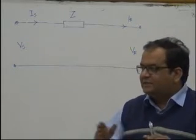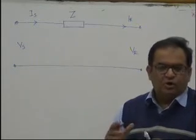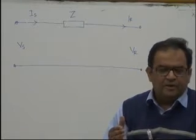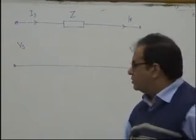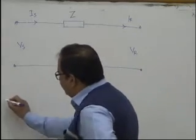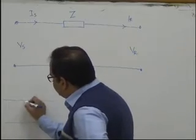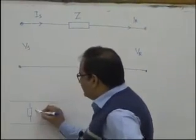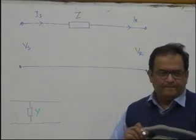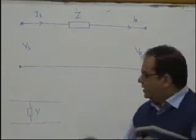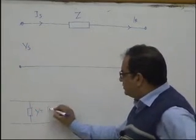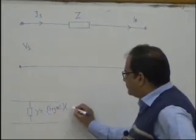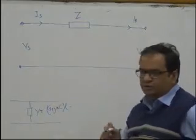But as the length of the line increases, or we are interested in more accuracy, we can no longer ignore the admittance between the two lines, which is Y. That Y, which was equal to some G plus j-omega-C into the entire length of the line, we cannot ignore it.